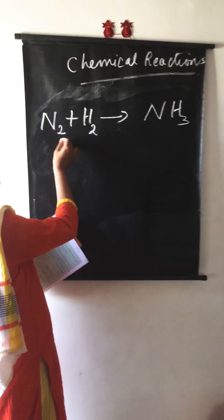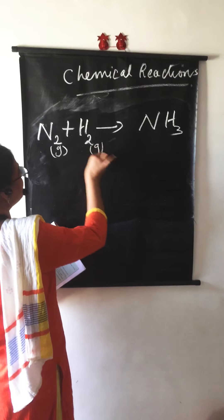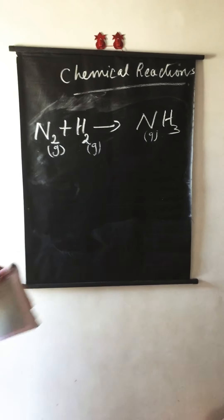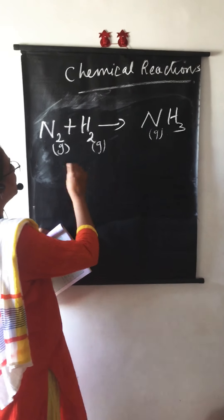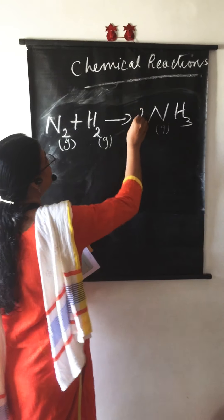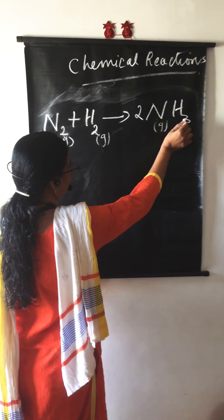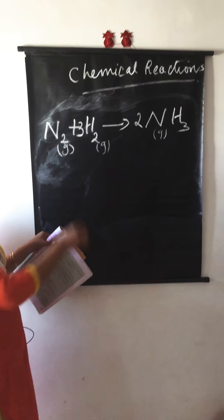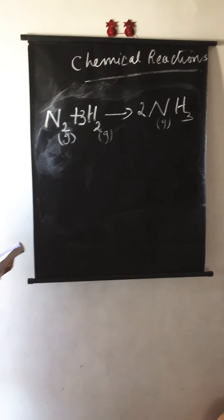You can also represent the physical state — nitrogen is in gaseous stage, hydrogen is in gaseous stage, ammonia is also in gaseous stage. Now balancing: there are two nitrogen atoms on the left and only one on the right, so put 2 in front of NH3. Nitrogen is now balanced. For hydrogen: 3 times 2 gives 6 on the right, so put 3 in front of H2 on the left — 3 times 2 gives 6. Hydrogen is also balanced. That's the first equation: N2 + 3H2 → 2NH3.